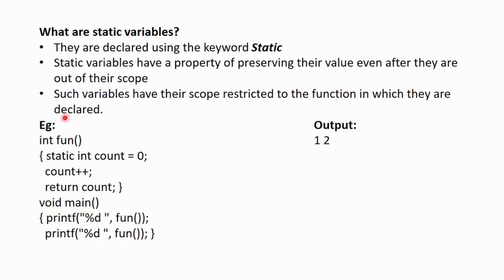Let us understand the use of static variables with the help of an example. Here we have taken a function whose name is fun. It takes no arguments and has integer as its return type. In its body, we have declared an integer variable count with the keyword static and have initialized it to 0.